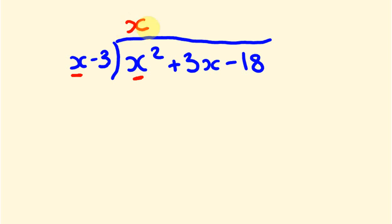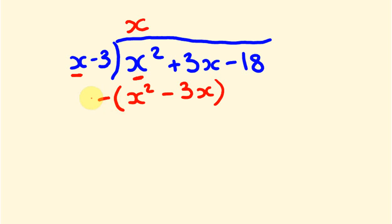We ask: how many times does x go into x squared? The answer is x. So x times x is x squared, and x times minus 3 is minus 3x. We subtract these from our polynomial. x squared minus x squared cancels out. Then 3x minus minus 3x — a minus and a minus becomes a plus — so we get 6x. We bring down the minus 18.